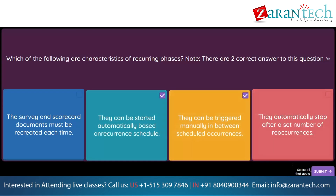Question. Your customer recently qualified a supplier for IT Services in Europe. Which of the following actions can take place now? Note, there are two correct answers. Option 1: The supplier can be designated as preferred for IT Services in the United Kingdom. Option 2: The supplier can be designated as preferred for all commodities in the United Kingdom. Option 3: The supplier can be disqualified for all commodities in Europe. Option 4: The supplier can be disqualified for IT Services in Germany.